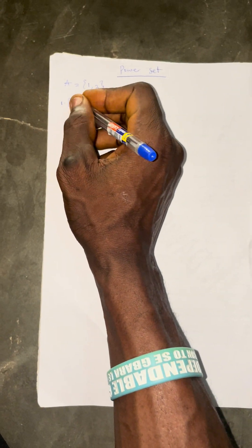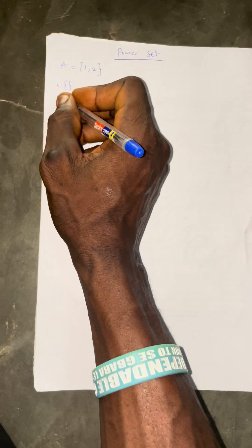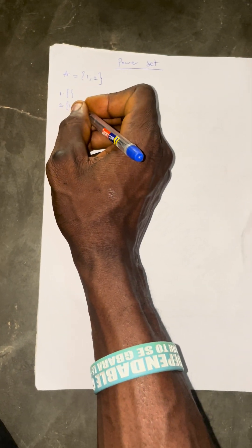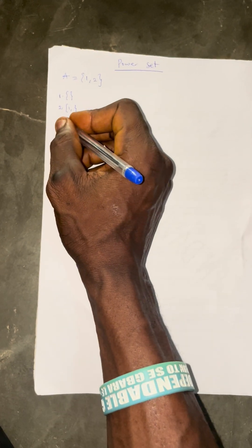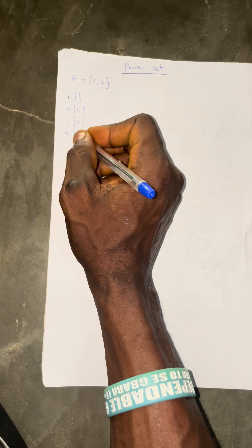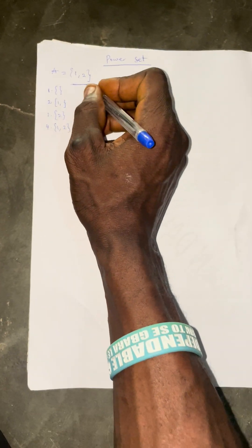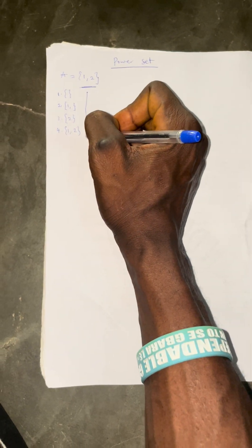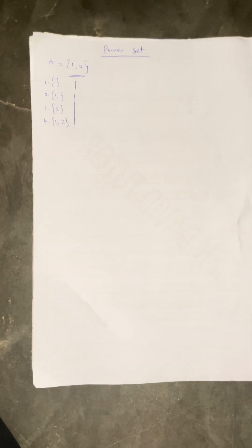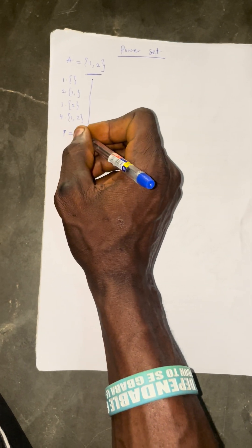Number 1, you firstly have the empty set. Number 2, you have {1}. Number 3, you have {2}. Number 4, you have {1, 2}. This particular set A has four subsets, because the power set indicates the total number of subsets. So that means the power set of this set equals 4.